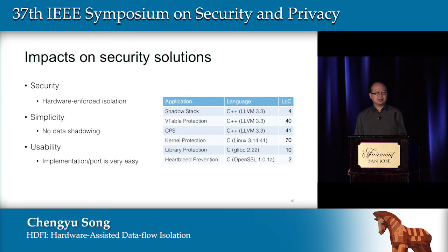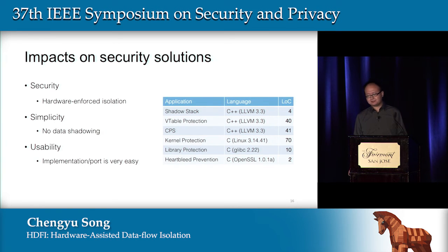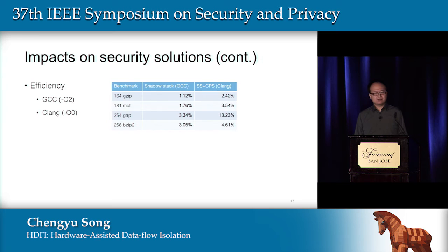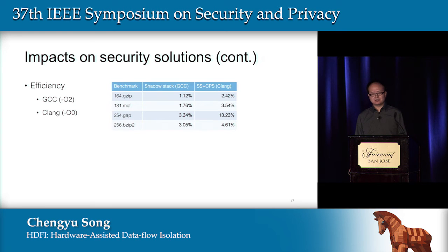The second aspect is simplicity. By eliminating the need for data shadowing, applications built upon HDFI are much simpler. For example, our return address protection application is far simpler than existing shadow stack implementations. The third aspect is portability — the effort to port existing security solutions to be HDFI-based is quite minimal, as shown in the table. For example, to implement a shadow stack, we only modified four lines of code in LLVM. Finally, we evaluated the efficiency of HDFI-based solutions. The performance numbers are quite good. The only exception is for certain solutions because of the immaturity of the current toolchain — we can only compile with O0, and being an in-order execution core, we are quite sensitive to compiler optimizations.